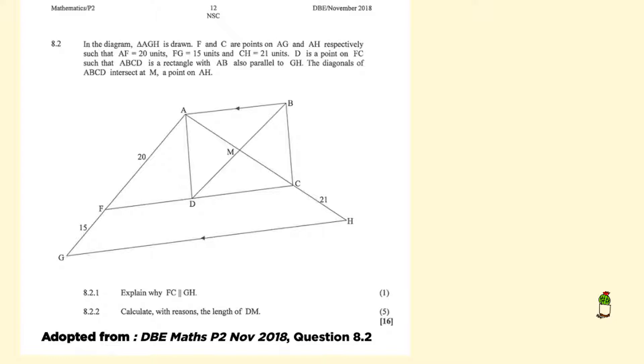Such that AF equals 20 units, FG equals 15 units, CH equals 21 units, and D is a point on FC such that ABCD is a rectangle.